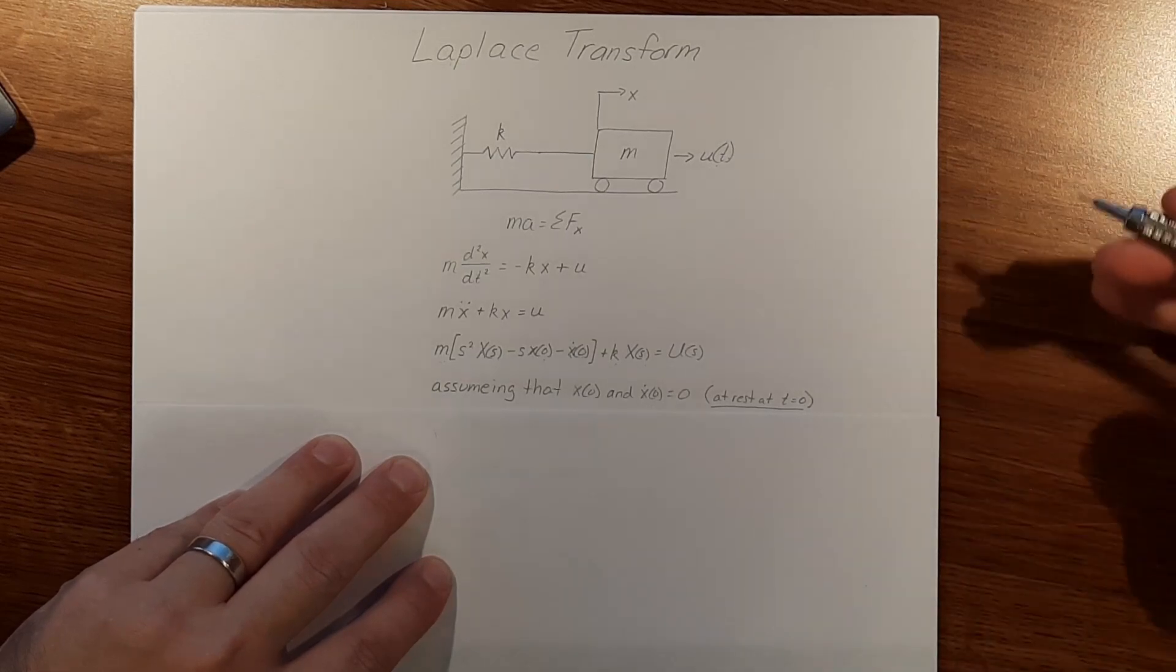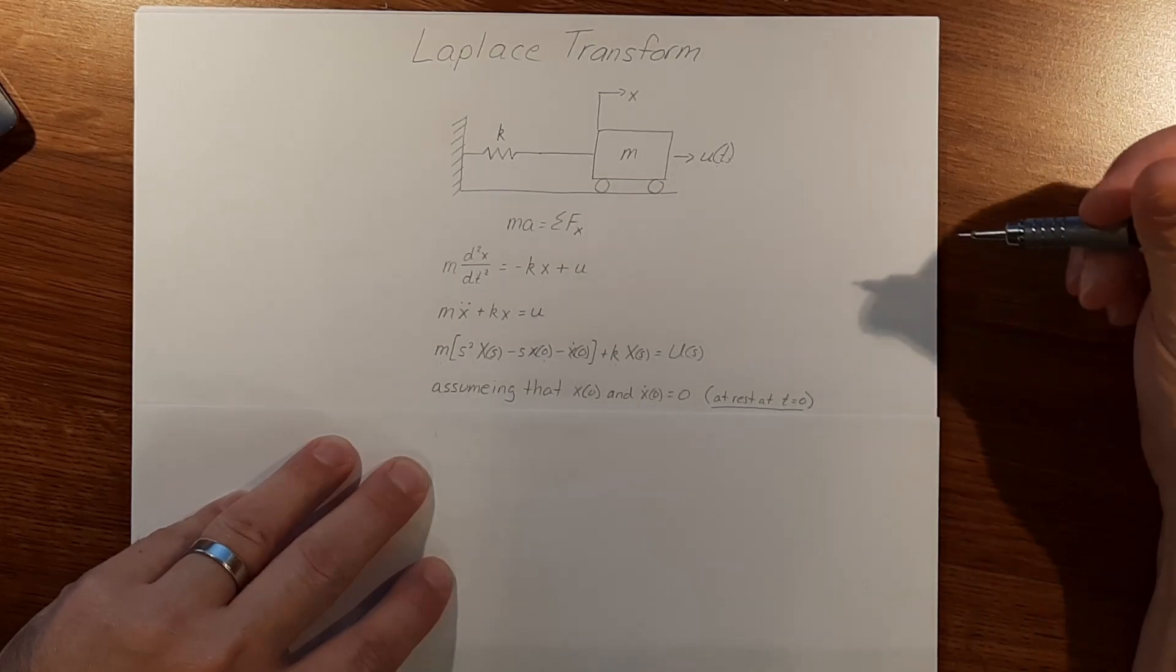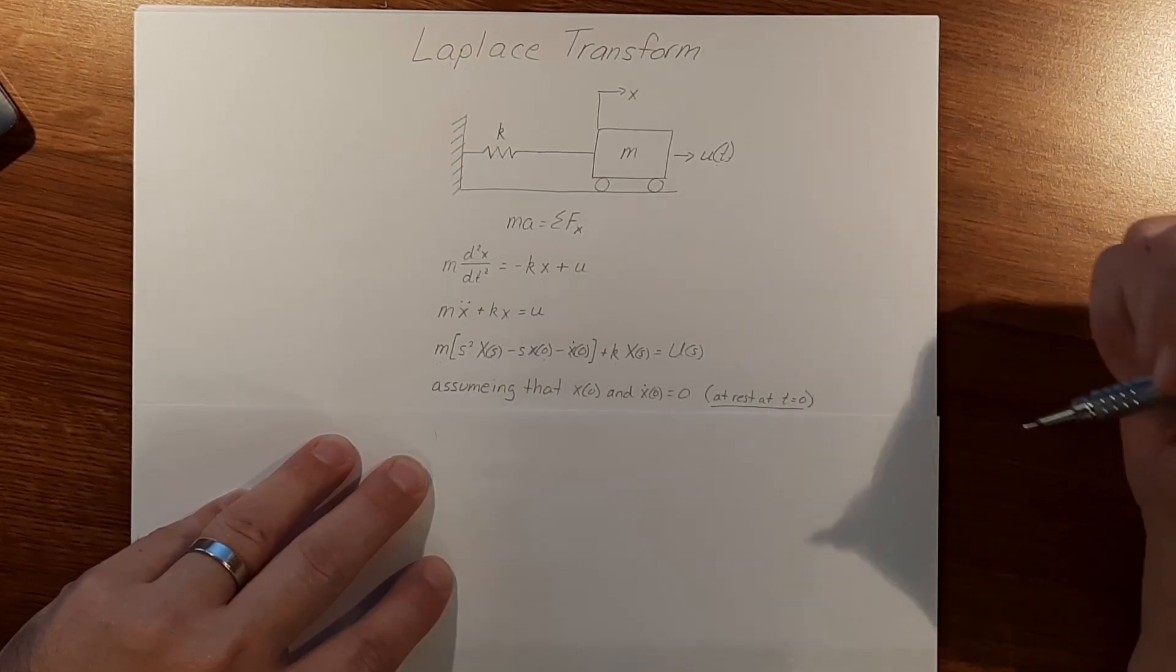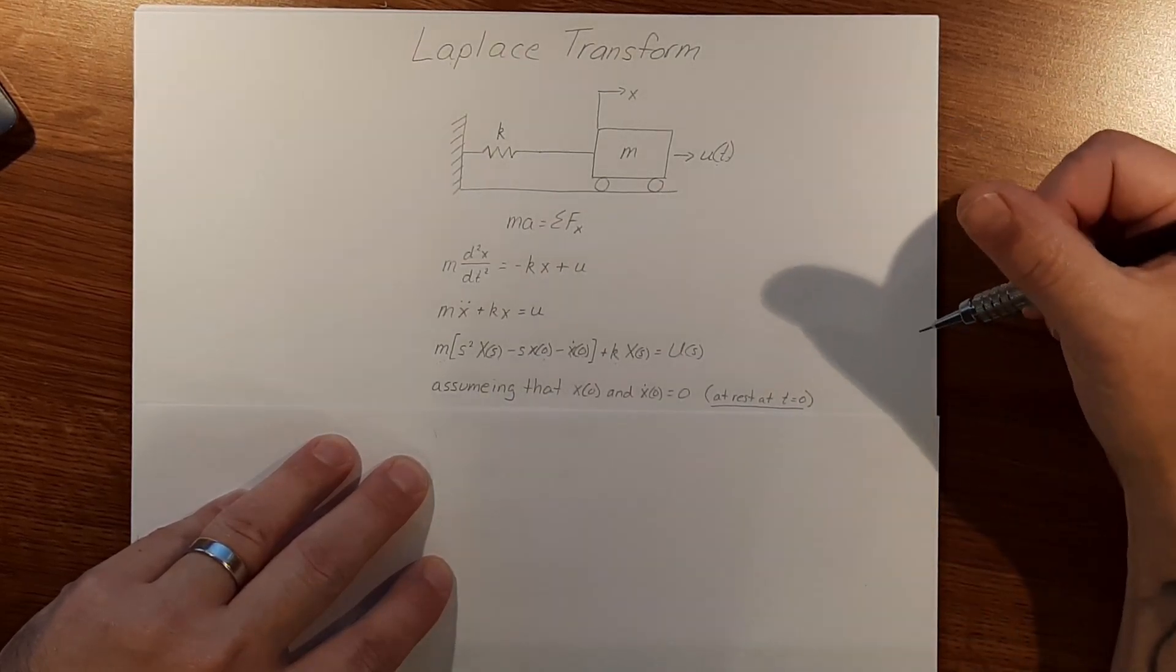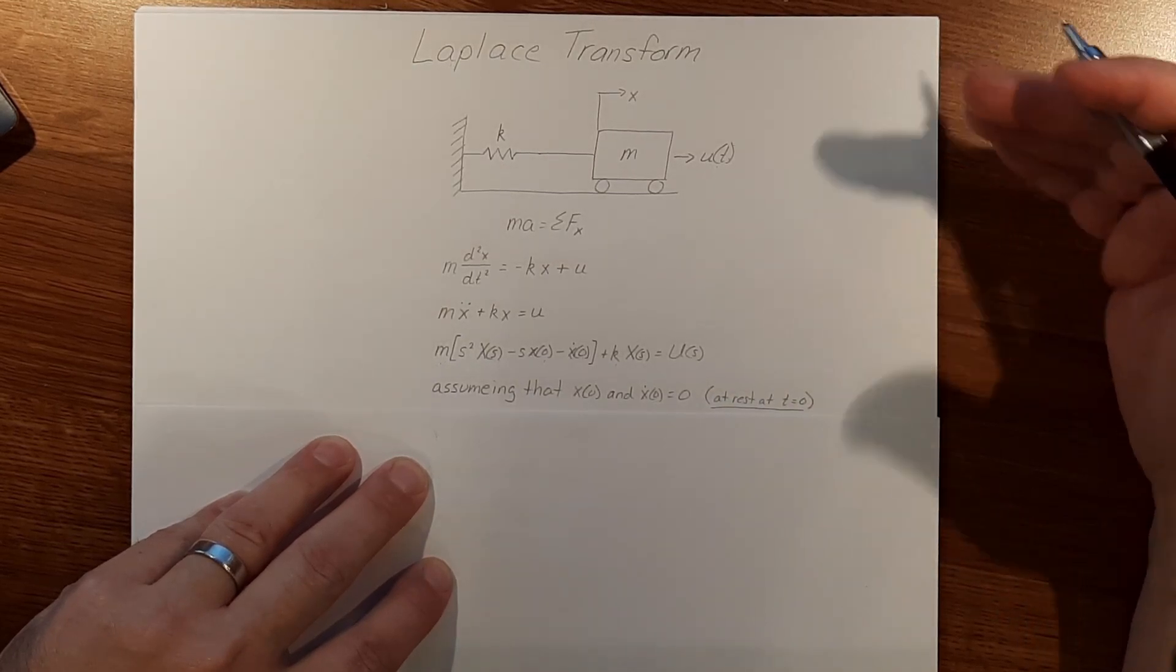So our system is at rest at t equals zero. This is normally the case. If you're working on a problem, it'll tell you what x of zero and x dot of zero are, or it'll tell you a position that it's at before it starts moving.